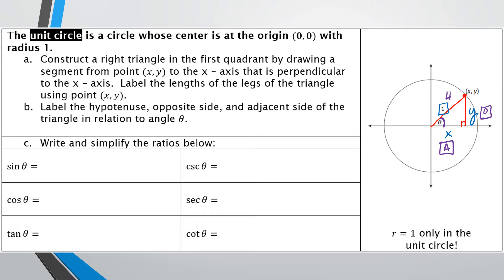Last year when you took geometry, you learned SOHCAHTOA — sine, cosine, and tangent using the opposite, adjacent, and hypotenuse as your sides. Let's go through and figure out what those are for sine, cosine, and tangent, and then we'll deal with the other three in a minute.